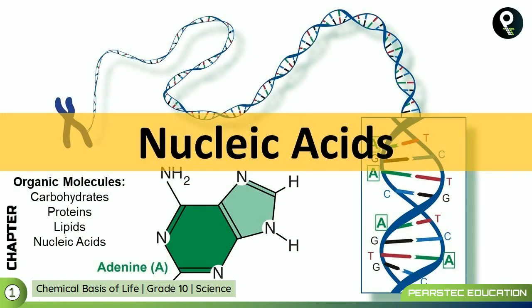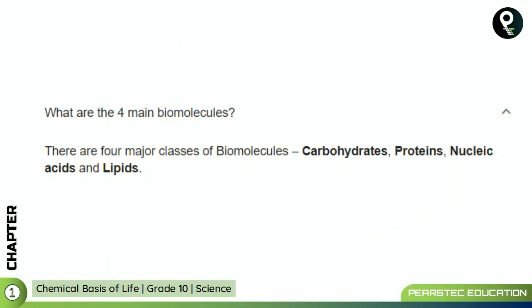Nucleic acid — what this nucleic acid is made of, we will understand. Before that, we have to understand what are the four main biomolecules. There are four major classes of biomolecules: those are carbohydrates, protein, nucleic acids and lipids. We already talked about carbohydrates, proteins and also the lipids, so this is the time for us to understand the nucleic acid.